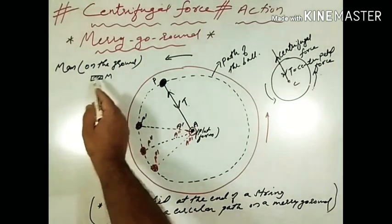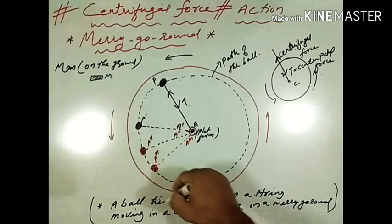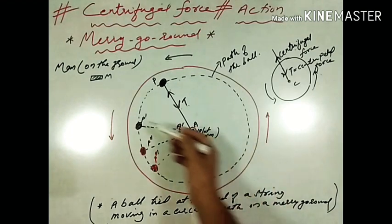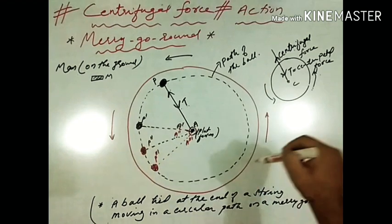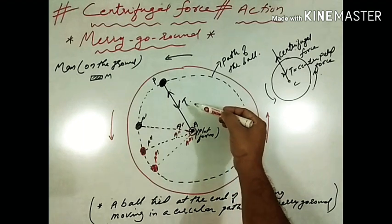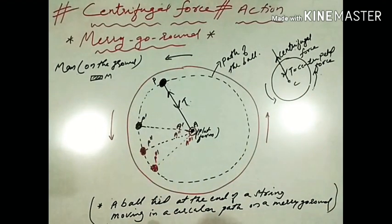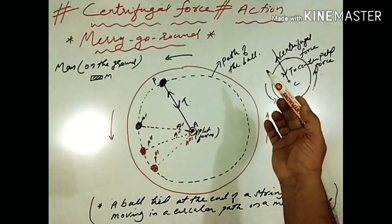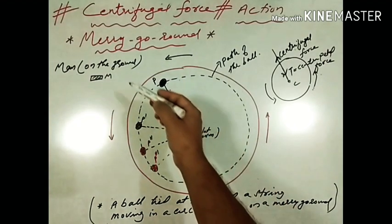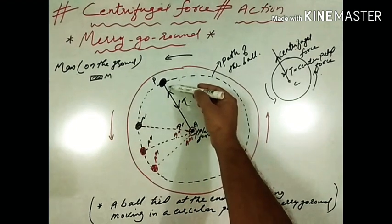For the person on the ground at point M, the ball moves in a circular path because the force of tension in the string provides the necessary centripetal force. So for a person on the ground, the ball is moving in a circular path, while for a person on the platform of the merry-go-round, it appears to be stationary. This is how centrifugal force acts in the case of a merry-go-round.